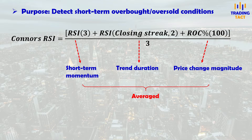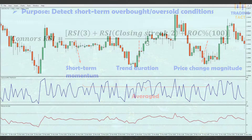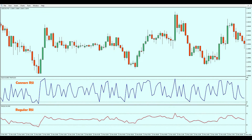You could, of course, tweak the default parameters of 3, 2, and 100 if you want a faster or slower indicator. The Connors RSI isn't included in MetaTrader by default, but I have left a download link for the MQ4 and MQ5 files in the description.